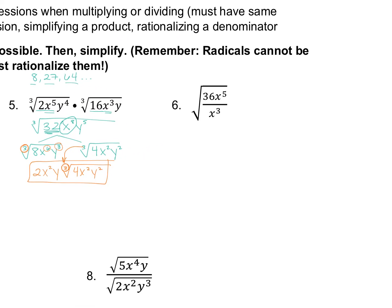Number six: divide first. This is going to be the square root of 36 over X squared — you just subtract the exponents. The square root of 36 is six, the square root of X squared is X, and you're done. Quick one.